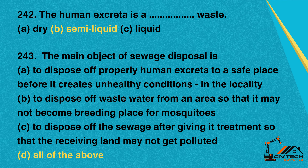Question 243: The main object of sewage disposal is. A. To dispose off properly human excreta to a safe place before it creates unhealthy conditions in the locality. B. To dispose off waste water from an area so that it may not become a breeding place for mosquitoes. C. To dispose off sewage after giving it treatment so that the receiving land may not get polluted. D. All of the above. Correct option: D. All of the above.